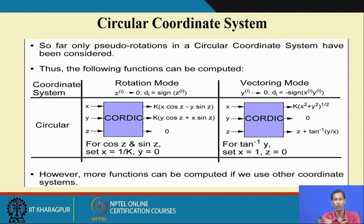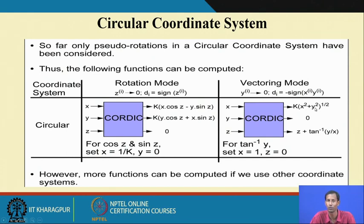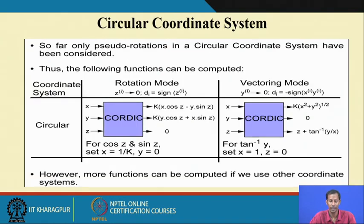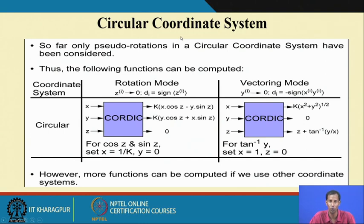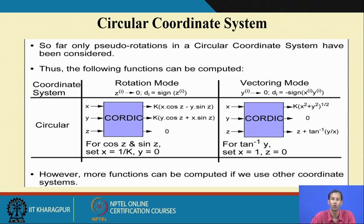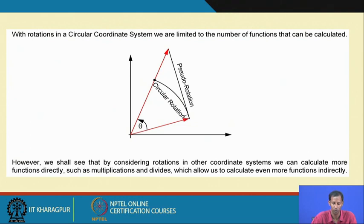If z initially is set to 0, that gives tan inverse of y by x. With y equals 2 and x equals 1, at the output I get K times the square root of 4 plus 1, which is square root of 5. So the circular CORDIC run in rotation mode can calculate sin theta and cos theta. In vectoring mode it can compute tan inverse of theta and also the square root of x squared plus y squared. If I need only a square root, I can put y equals 0 and get the result at that output.